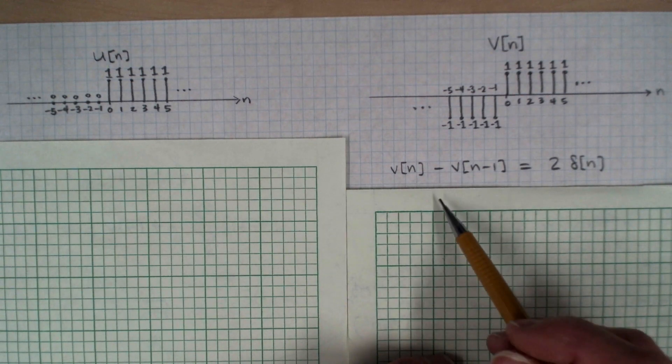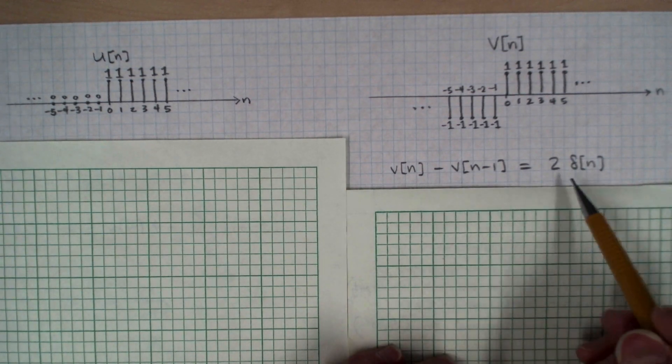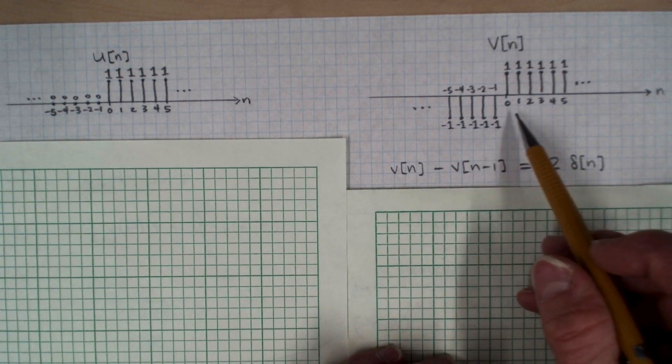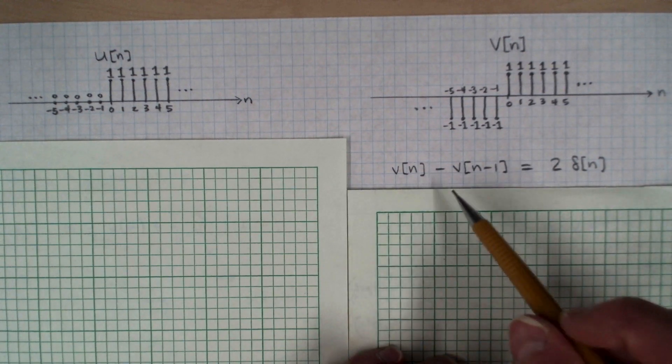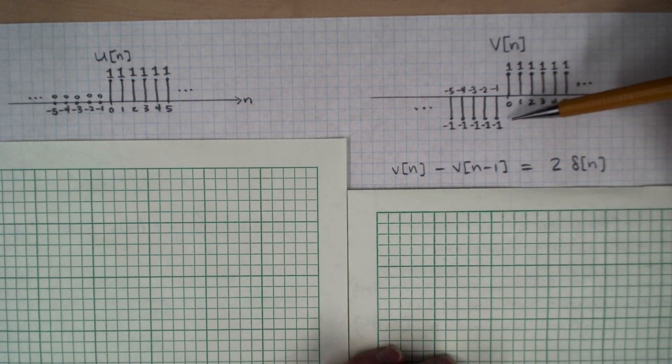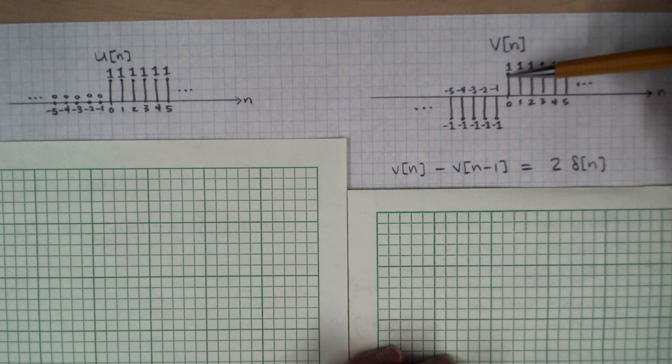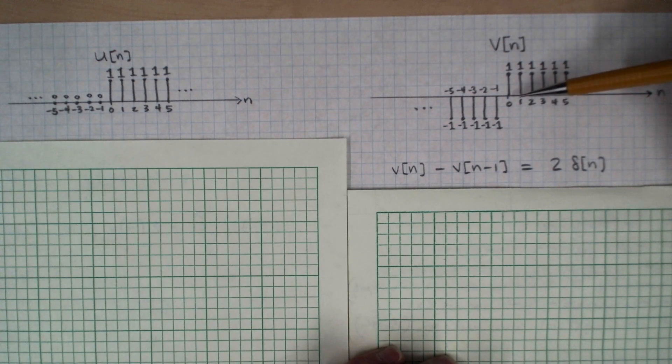And I'm not going to dwell on proving this right now, but I think if you work with this sequence, you can see that if you delay by a sample and subtract, you'll get two Kronecker deltas piling up here at time zero, and you'll get cancellation at all the other times.